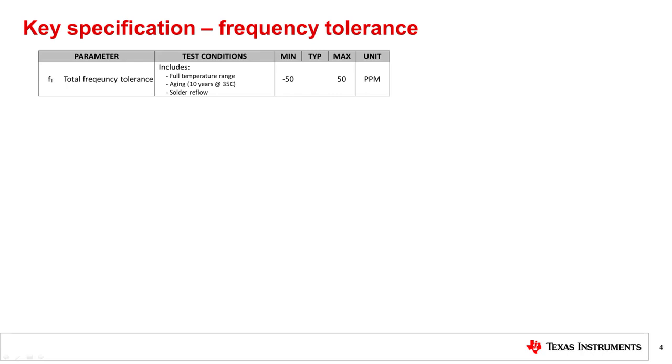The frequency tolerance is often the key spec for system requirements. Total frequency tolerance is the maximum frequency drift the device will observe over its full lifecycle and operating temperature range. The total should account for the three largest contributing factors: temperature range, aging, and finally, solder reflow. This measurement is done in PPM parts per million. The difference between the measured frequency and ideal frequency normalized and multiplied up to PPM.